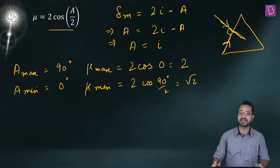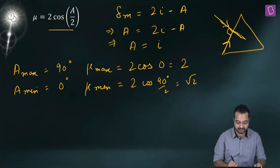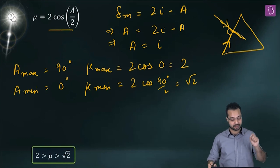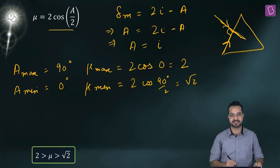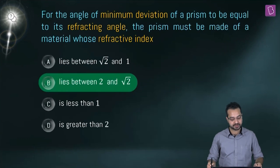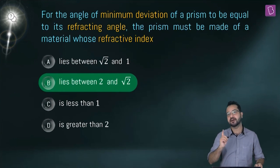So the refractive index lies between √2 and 2. That is going to be the answer. Option B is the right option.